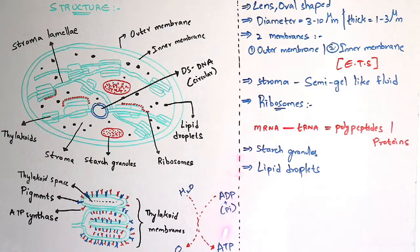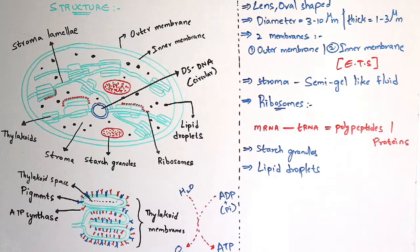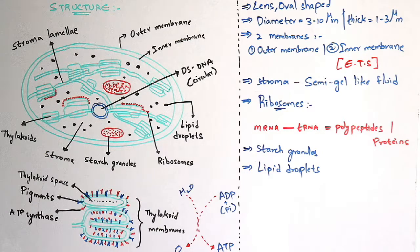ADP stands for adenosine diphosphate — it consists of two phosphate groups. ATP stands for adenosine triphosphate — it consists of three phosphate groups. ATP is formed from ADP when one inorganic phosphate group (Pi) is attached to ADP. Normally ADP has two phosphates; when Pi attaches, three phosphate groups are formed, resulting in ATP — adenosine triphosphate. This is the brief explanation of chloroplast.